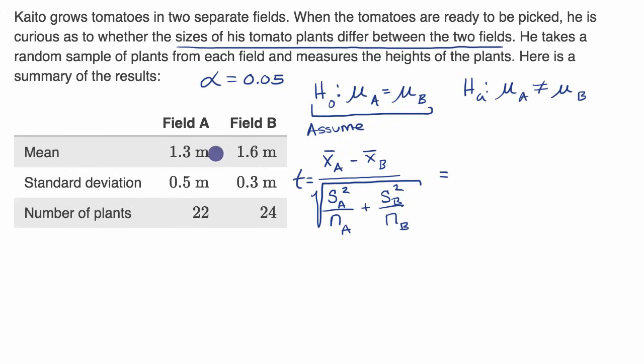This numerator is going to be equal to 1.3 minus 1.6, all of that over the square root of—the sample standard deviation from the sample from field A is 0.5. If you square that, you're going to get 0.25, and then that's going to be over the sample size from field A, over 22, plus 0.3 squared, so that is 0.09, all of that over the sample size from field B, over 24.